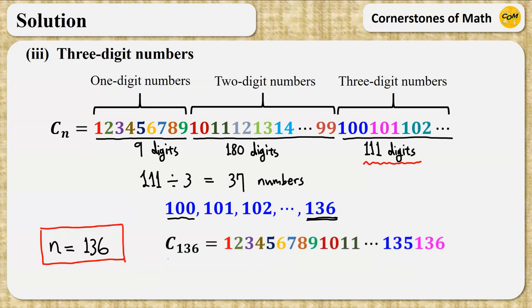That is, C136, which is 1, 2, 3, 4, 5, 6, and so on, all the way up to 1, 3, 5, 1, 3, 6, is a 300-digit number.